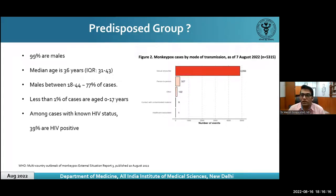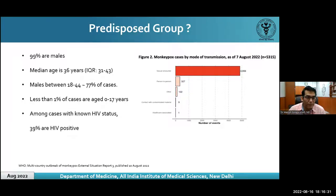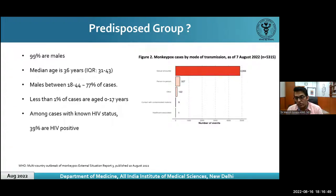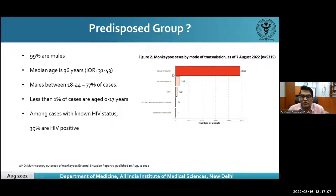From WHO situation report three dated 10th August: nearly all cases — 99% — are males, median age 36 years, with males aged 18–44 constituting 77% of cases. Less than 1% are children. Among cases with known HIV status, 39% are HIV positive. By mode of transmission, sexual encounter has been documented in 90% of cases; others include person-to-person contact and fomites, and one healthcare-associated case.